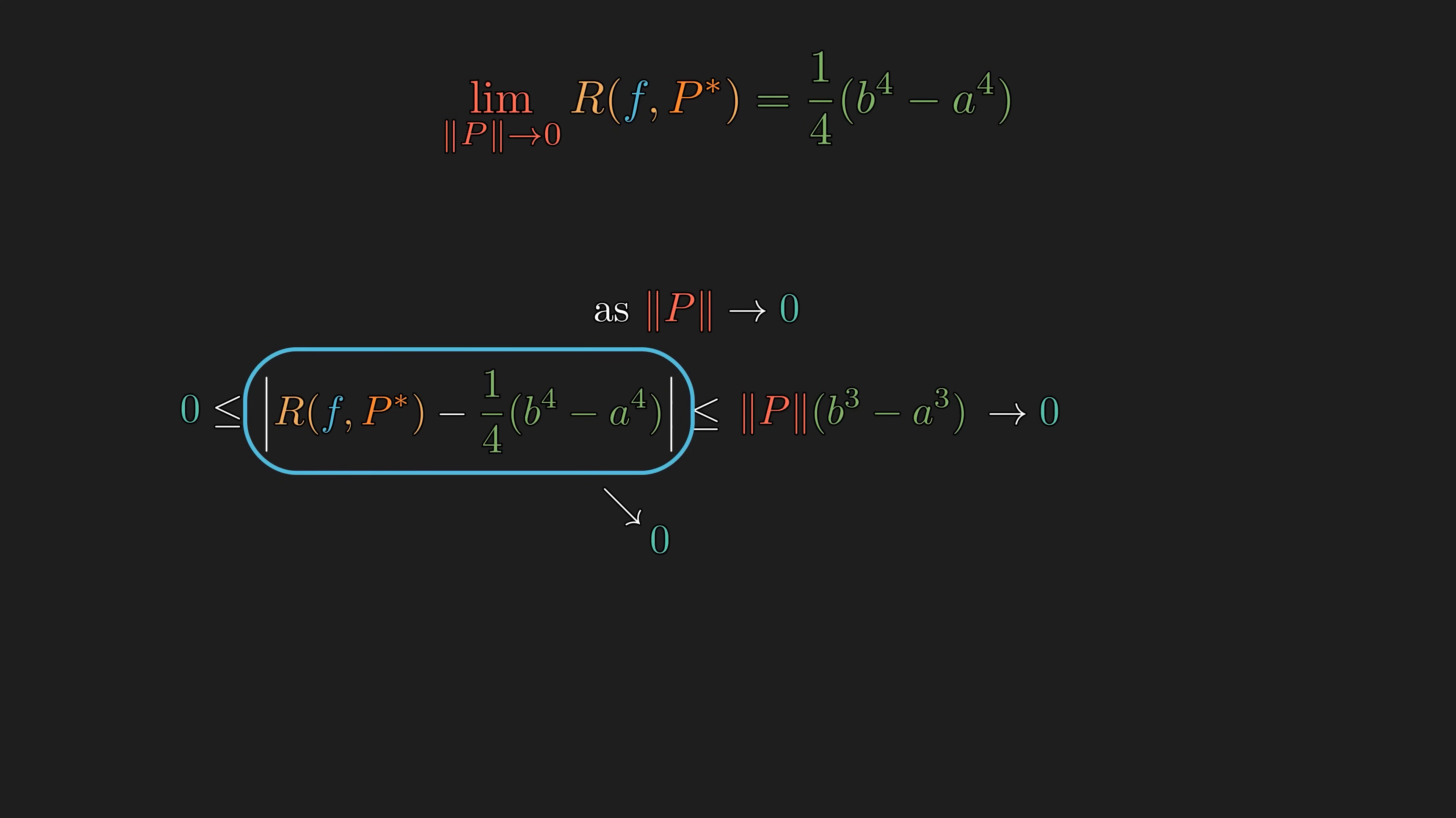This definitely is not an easy proof for such an elementary result. One issue with this definition is that we were required to know in advance what the limit was supposed to be. Our biggest difficulty came from the fact that the limit has to exist for all possible combinations of partitions and tags. So maybe we could find a better way to do this.